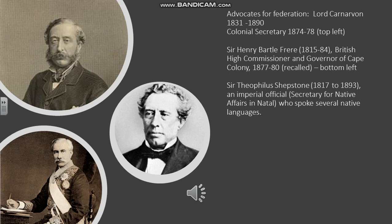In this slide you have the three characters most associated with plans for a federation of southern African states. Top left is Lord Carnarvon, the colonial secretary. He had been involved in a plan to federate the Canadian states which seemed to have worked, so he thought the same thing could be achieved in southern Africa, even though southern Africa was much more diverse in terms of its inhabitants. He thought a federation was necessary to prevent encroachment by the Boers, to make the Boers part of the federation, and also to provide security against potential rebellions by African tribes.